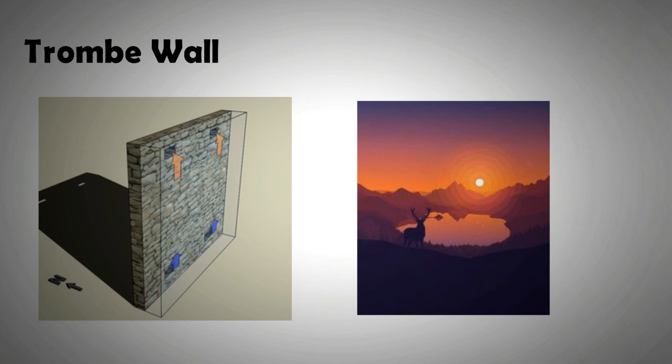Trombe walls are found in many northern European countries and with this the topic of passive heating and cooling of buildings using solar chimney and trombe wall is concluded.